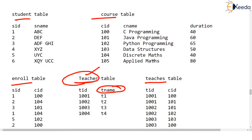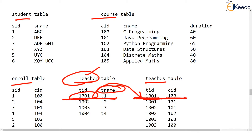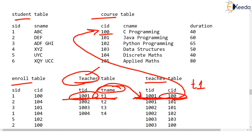We want to display teacher name like t1 along with the course that this teacher teaches. The id of this teacher is 1001. Then you go to the teachers table and see that 1001 is teaching course 100. But we want the course name, so we go to the course table and see that course 100 is C Programming. So t1 teaches C Programming.